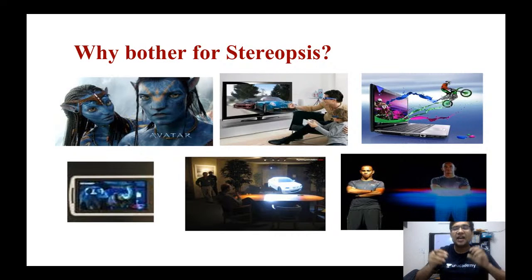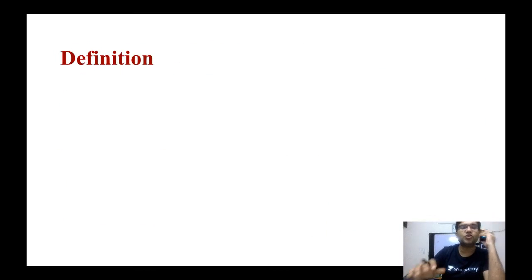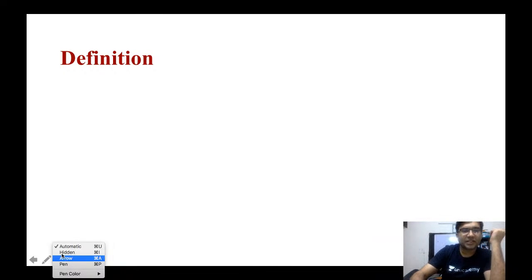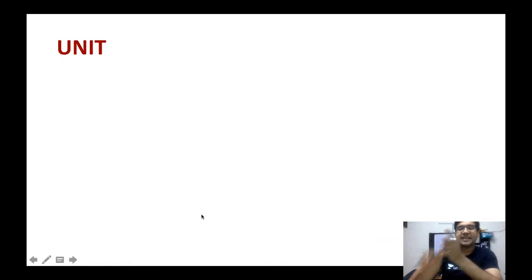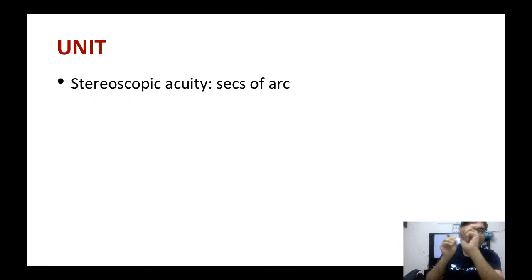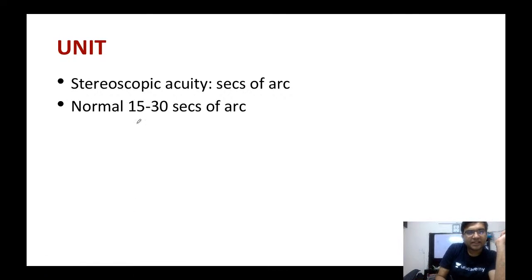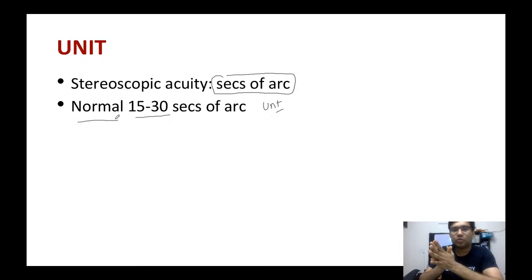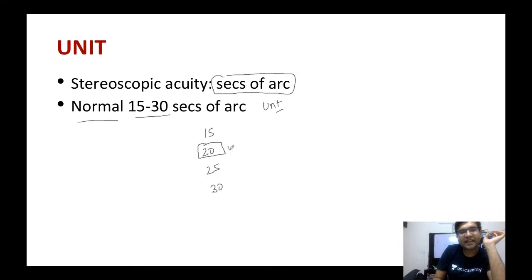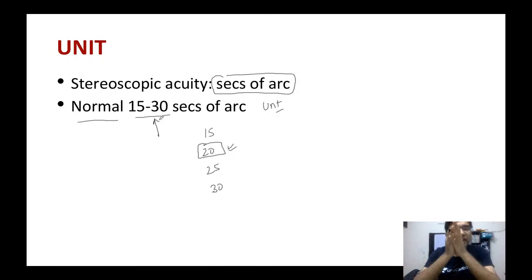Whenever we have to measure stereopsis, the unit is called seconds of arc. Remember: the unit of stereopsis is seconds of arc. The normal stereopsis is around 20 seconds of arc; if given as a range, it is 15 to 30 seconds of arc. Two important exam points: what is the unit of stereopsis, and what is the normal stereopsis — if options include 15, 20, 25, 30, answer 20; if a range is asked, answer 15 to 30 seconds of arc.